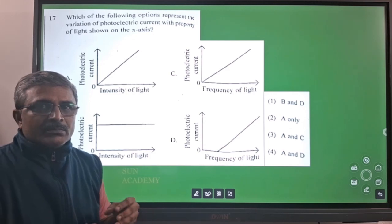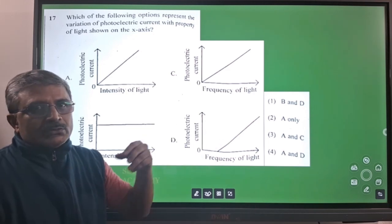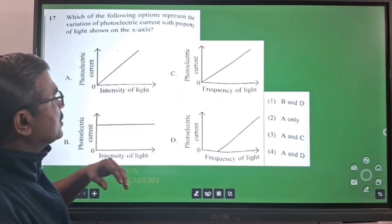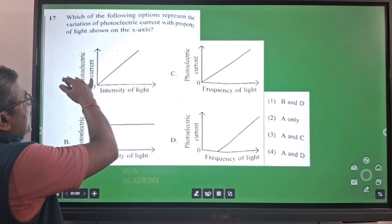When you increase the number of photons, number of charges will produce more. So when number of charges will produce more then current will become more. So obviously A is correct.